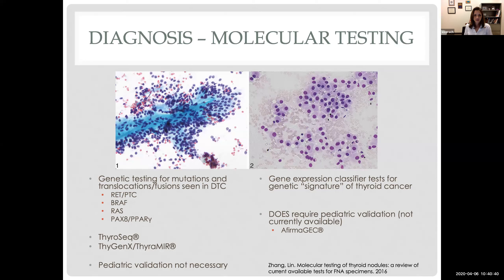At our hospital system, we typically do the FNA and draw an extra pass or two to hold in case we end up with an indeterminate result, then try to send for oncogene testing assuming we can get insurance approval. We don't send it out for everybody because these tests can be quite expensive, not always covered, and authorization can take considerable time. We save the sample and only send it when I think it's going to really impact our management.